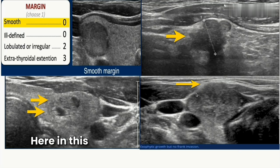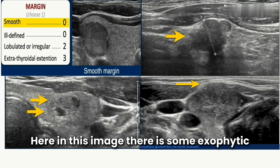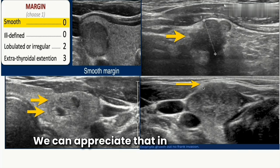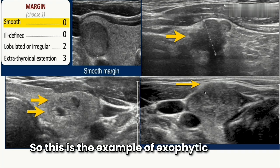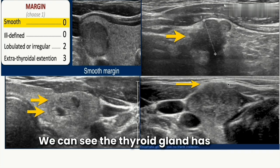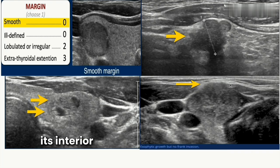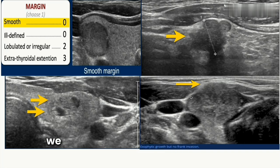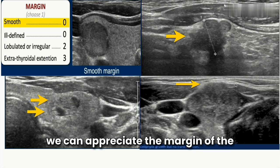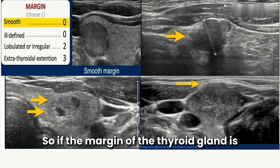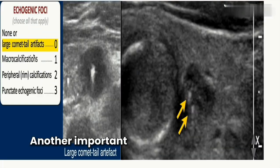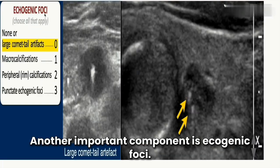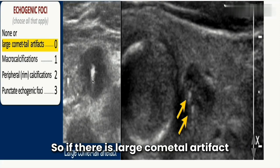If the thyroid lesion has extra-thyroidal extension, we give three points. In this image there is some exophytic growth, but we can clearly appreciate the thyroid margin, so this is an example of exophytic growth without frank invasion. Only if the margin of the thyroid gland is poorly visualized do we give three points for extra-thyroidal extension.